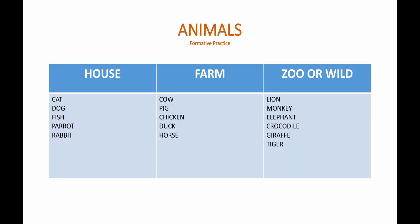Hello, today we are going to talk about house, farm, and zoo animals. In this chart we have a classification of some animals that your partners in the virtual class gave me. I divided the animals between house, farm, and zoo animals. House animals: cat, dog, fish, parrot, rabbit. Farm animals: cow, pig, chicken, duck, horse. Zoo animals: lion,